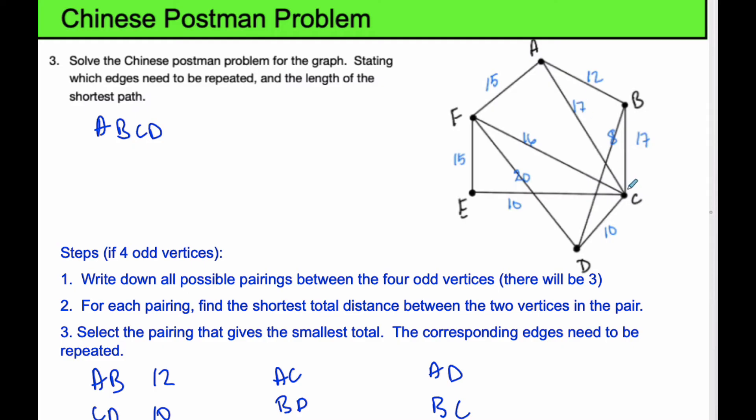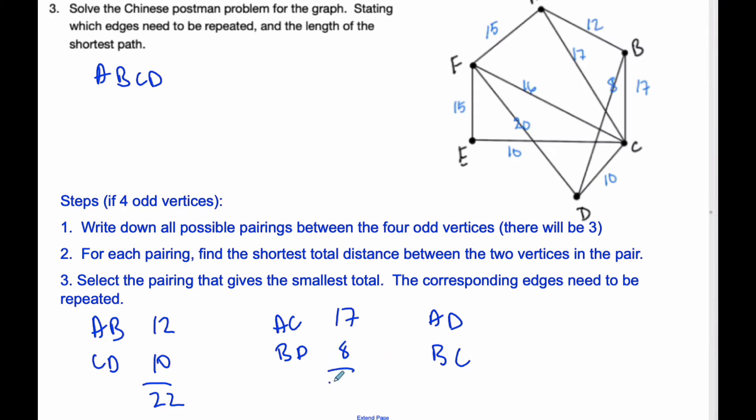If I go to AC, this is 17, is the shortest. I also compare it to 12 plus 17, and you have to look for every possibility, not just the most direct. The direct is usually the shortest, but not always. So that's going to be 17, and BD here is 8, which is shorter than the 27. So that's a total of 25.